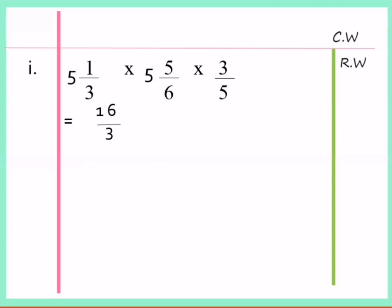Multiply. Now, next mixed number: 5 times 6 is 30. And 30 plus 5 is 35 over 6. Multiply 3 over 5.